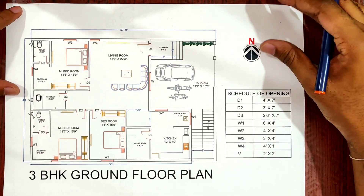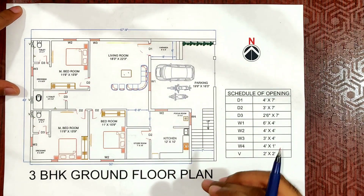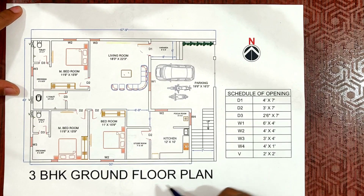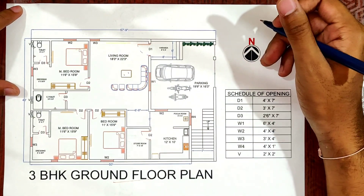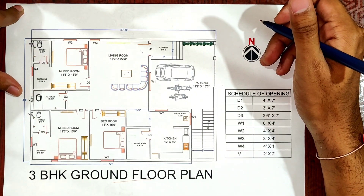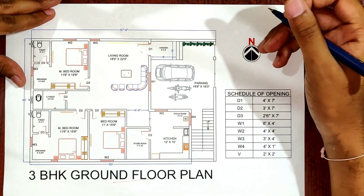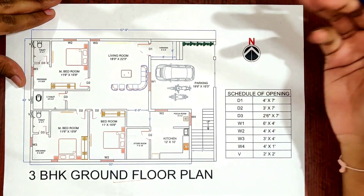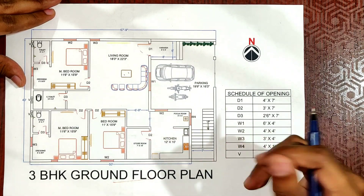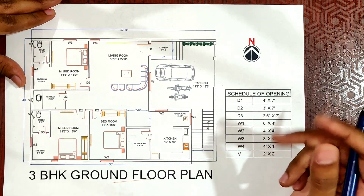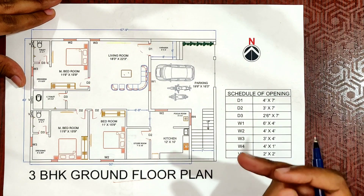Now we are going to discuss this plan. This is a 3BHK house plan, actually it is on the ground floor. One of the subscribers contacted us by email with their requirements, and we are going to discuss that plan.